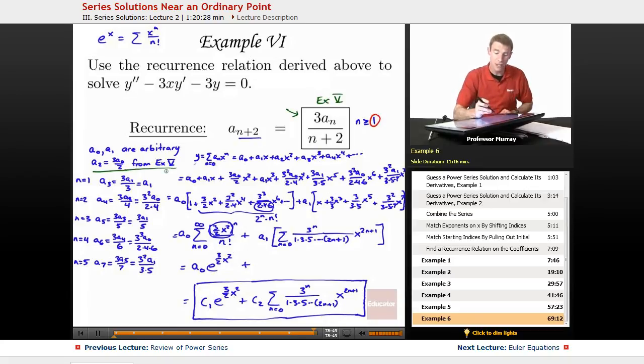Now, nothing here told us what A0 and A1 were, so we had to leave those arbitrary. But then we figured out A2 in terms of A0. And then plugging in the different values of N into this recurrence relation, N equals 1, 2, 3, and 4, gave us the higher coefficients in terms of the lower ones.